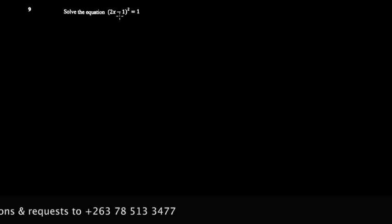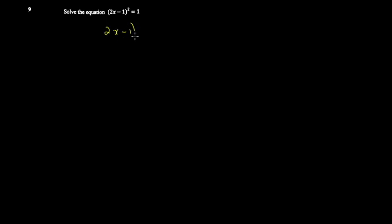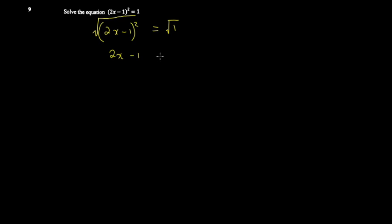The simpler method uses two methods. You can realize that this one is a square and this one is also a square. So what you do is get (2x minus 1) squared equal to 1. You actually get two values here. So the way I would do it is to take the square root, giving you 2x minus 1, as if you are working by completing the square.